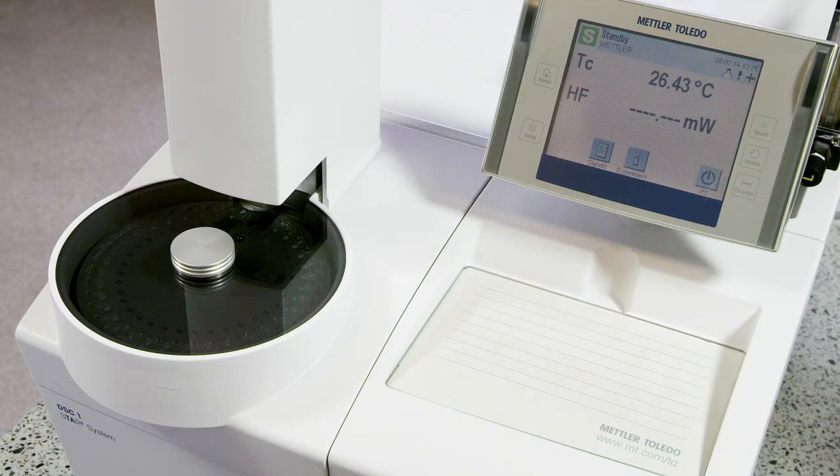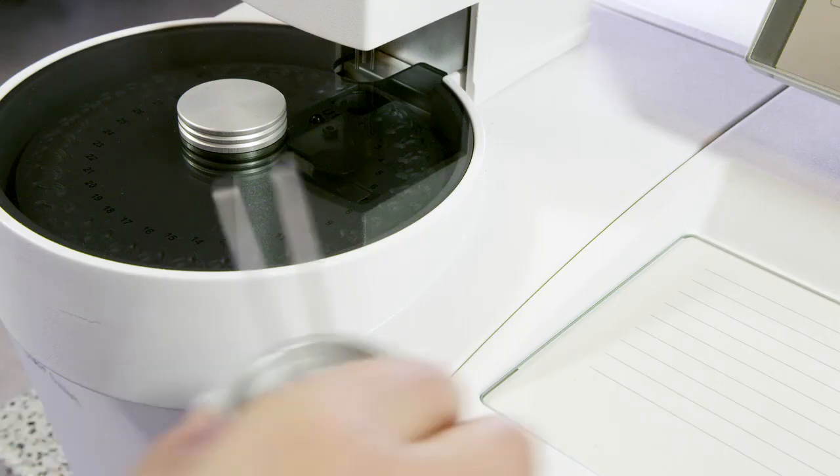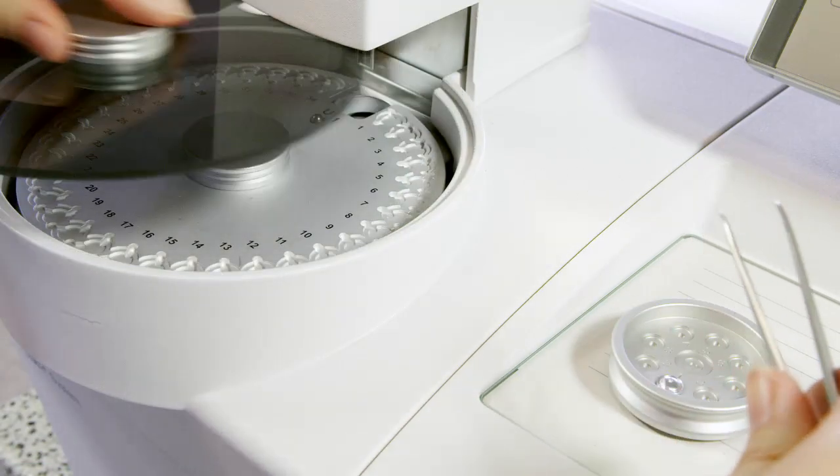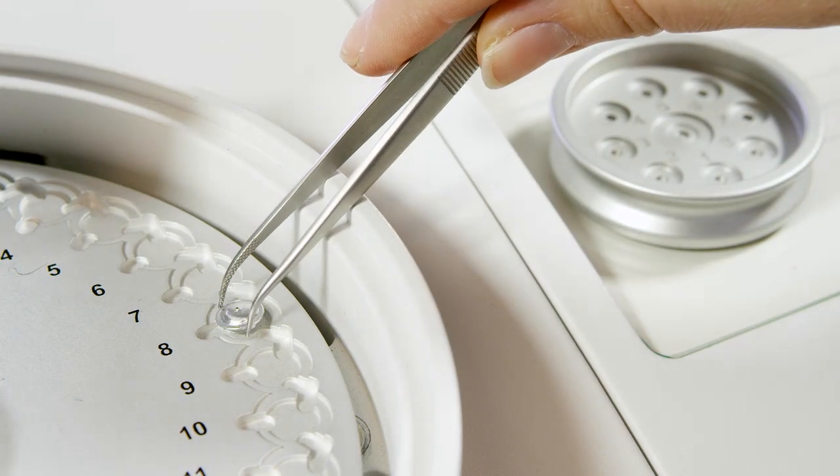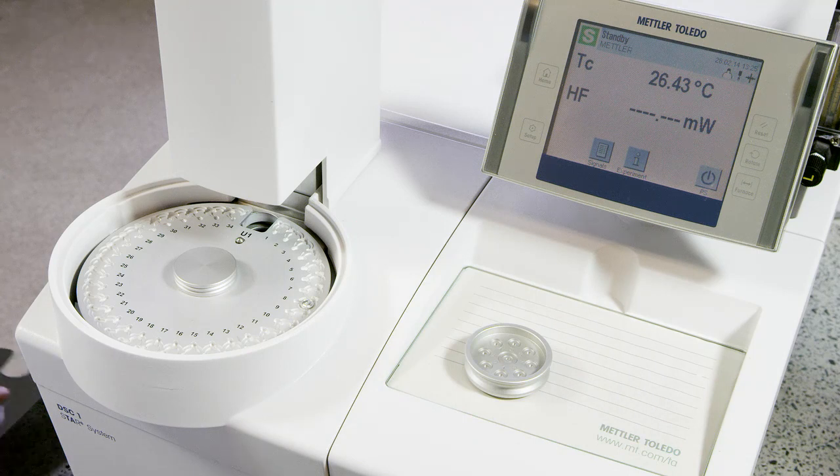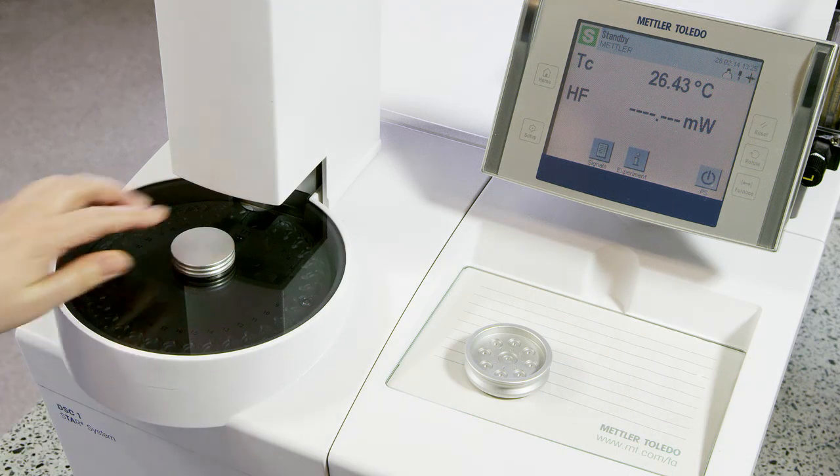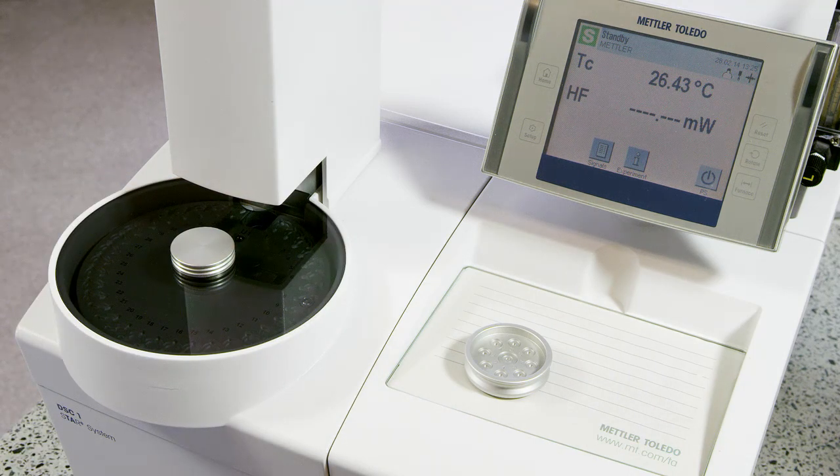Place the crucible support near the DSC and open the sample changer cover. Using tweezers, place the crucible containing the indium sample on a position of the sample changer tray. Make sure that an empty reference crucible is already on the reference side of the sensor.